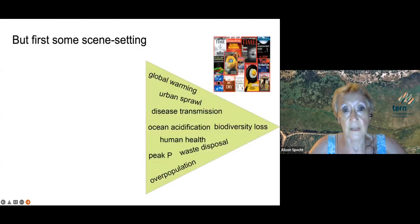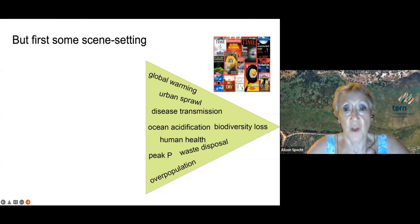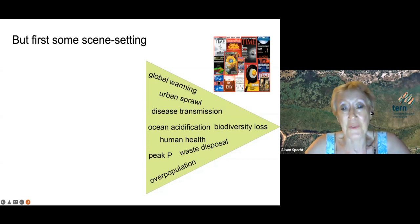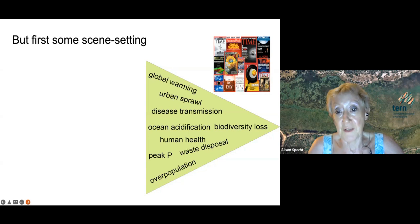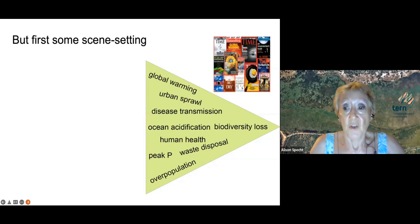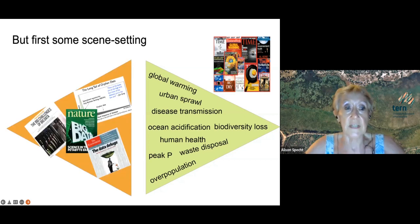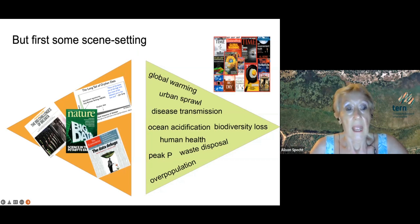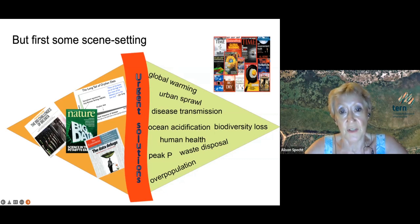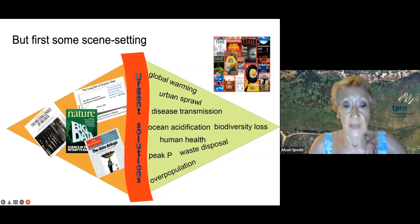Before I start, I'd like to make sure we have some scene setting. A lot of the motivation for this sort of movement is these complex environmental challenges we have had facing us over the last 20 years — global warming, disaster challenges, ocean acidification. Accompanying that is the challenge of big data, and we apparently have a plethora of data. This is where infrastructure steps in, such as TERN, NEON, and so on.